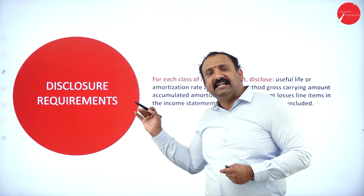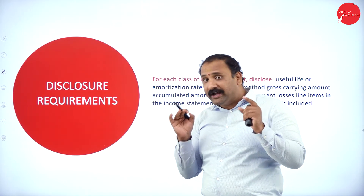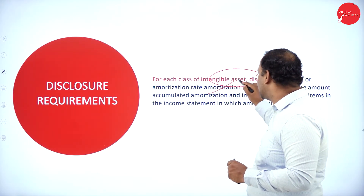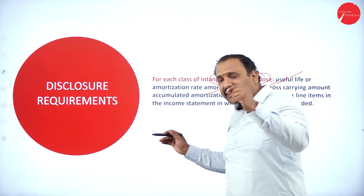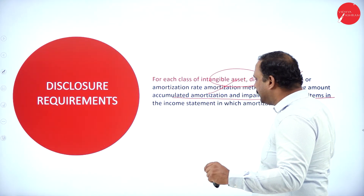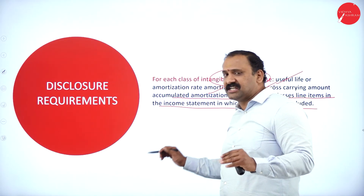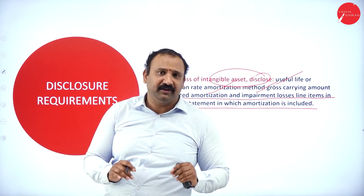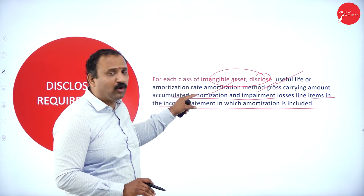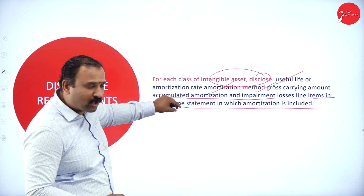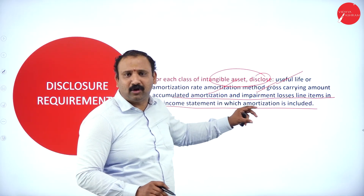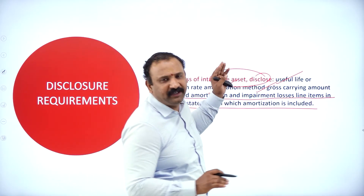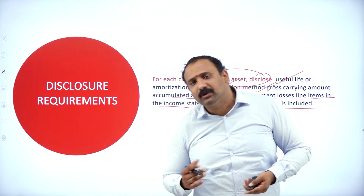Disclosure is very important for each class of intangible asset. Organizations must disclose the useful life or amortization rate, the method used, the gross carrying amount, accumulated amortization, impairment losses, and the line item in the income statement in which the amortization is included. In India especially, organizations must write down the useful life or amortization rate, including gross carrying amount, accumulated value, and impairment losses.